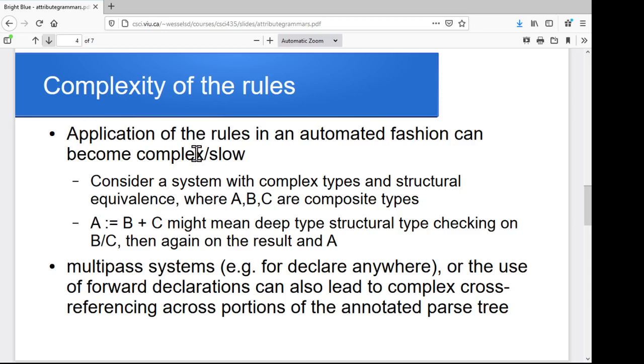The problem is that these rules can become very complex, and can wind up being very slow, and wind up taking a lot of memory space in a complex parse tree. If we've got complex data types to work with, and we're dealing with things like structural equivalents, where you've got these big complicated data types for A, B, and C, and you're having to go off and do type checking on each of these things in fair detail, then those things get passed down the tree, and maybe there's a layer of type checking that's taking place on them again down below.